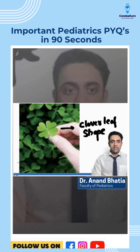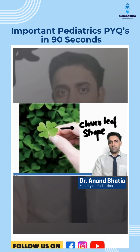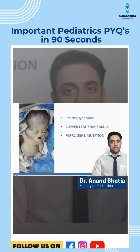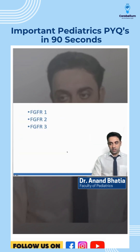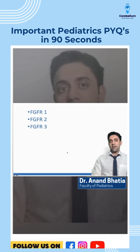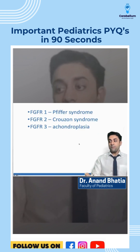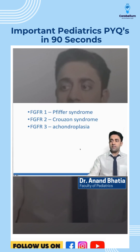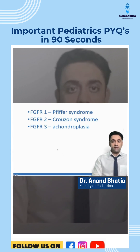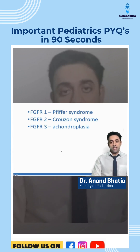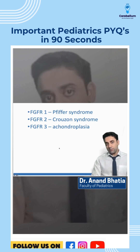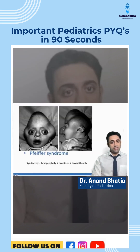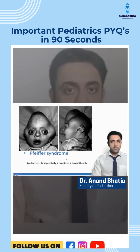A classical picture of the cloverleaf-shaped skull — this cloverleaf-shaped skull is seen in Pfeiffer syndrome, which is an FGFR1 gene mutation. Important associations: FGFR1 mutation is seen in Pfeiffer syndrome, FGFR2 is seen in Crouzon syndrome, and FGFR3 mutation is seen in achondroplasia.